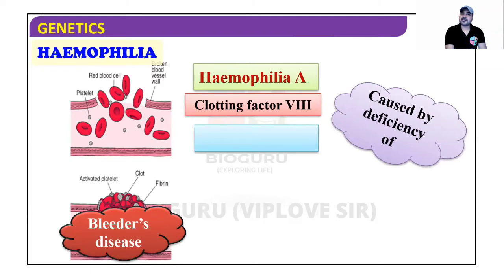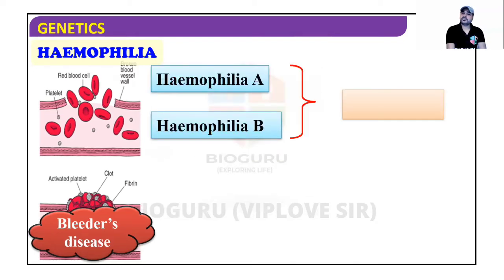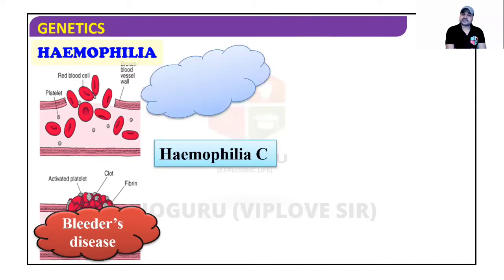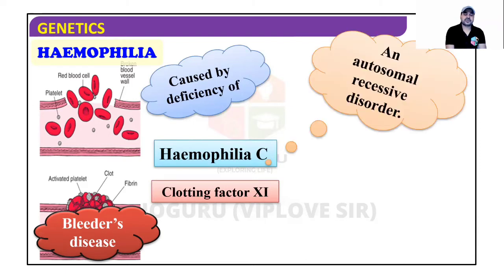Hemophilia A is caused by the deficiency of clotting factor 8. Hemophilia B is caused by the deficiency of clotting factor 9. There are 13 total factors for blood clotting — if certain factors are not produced, blood will not clot. Hemophilia A and B are X-linked recessive disorders.